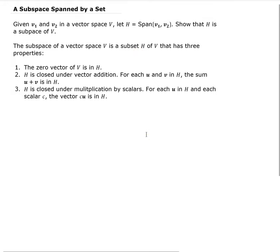In this lesson we're going to show that H, where H is the span of V1 and V2, is a subspace of V, where V is the vector space. The span of V1 and V2 means that if I pick any vector from the span, then that vector can be represented as a linear combination of V1 and V2. In other words, if I pick a vector V3, it can be represented as C1 times V1 plus C2 times V2.